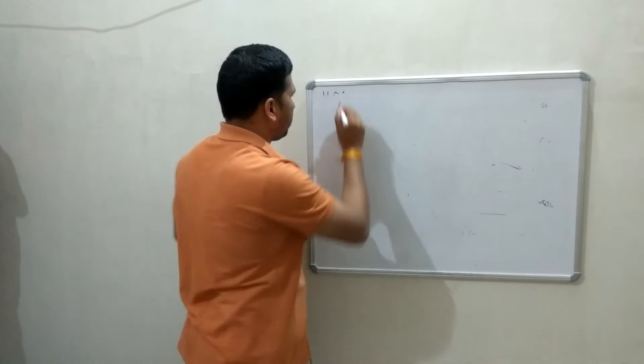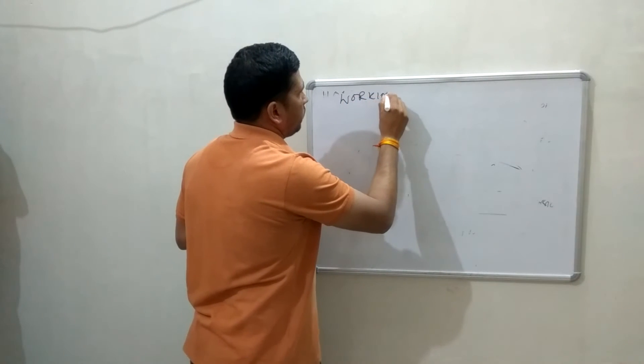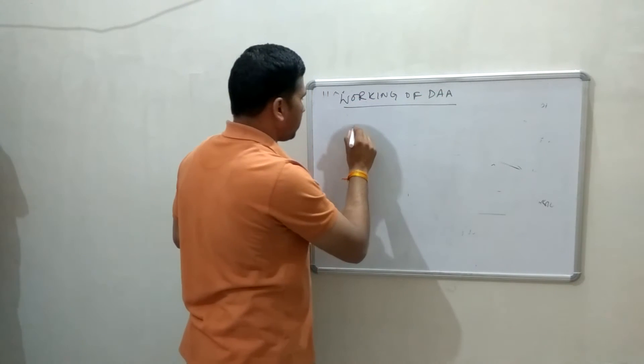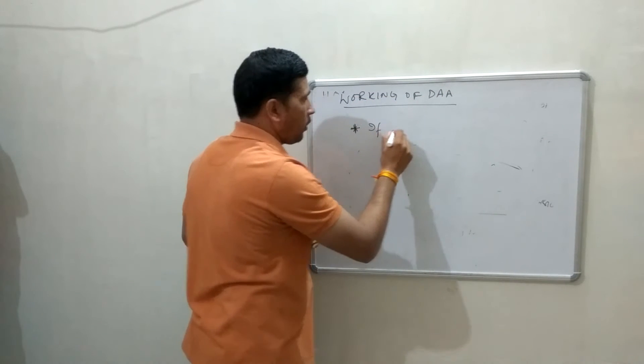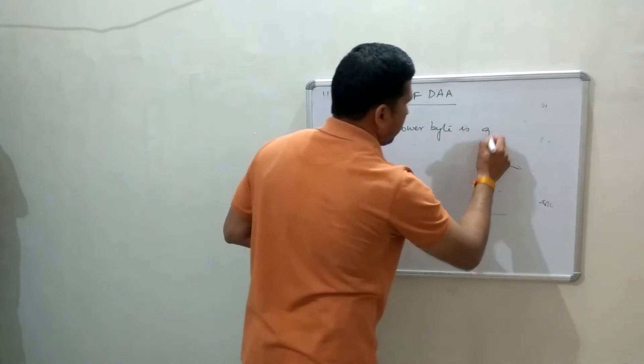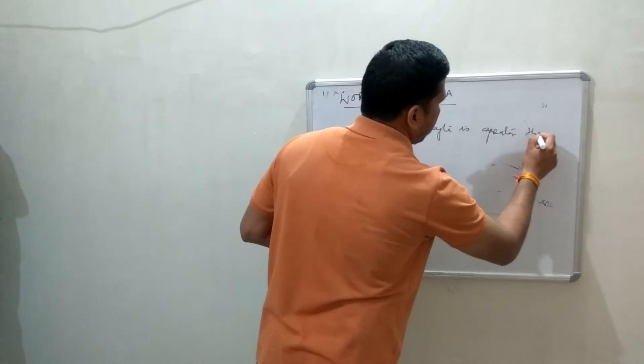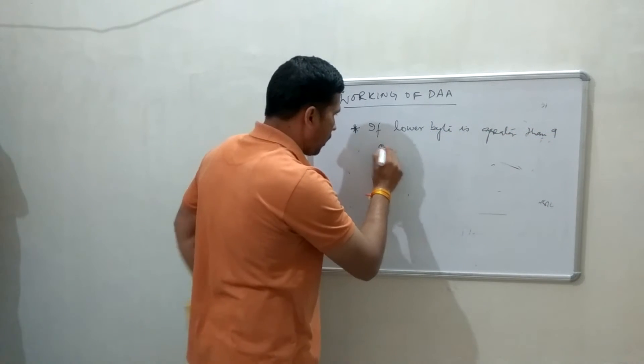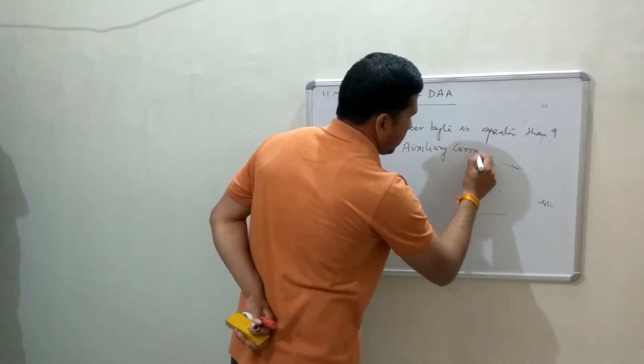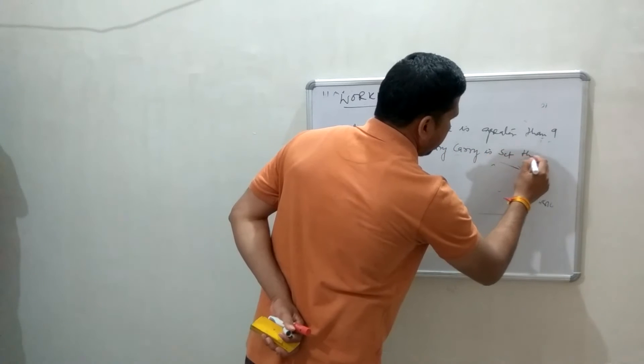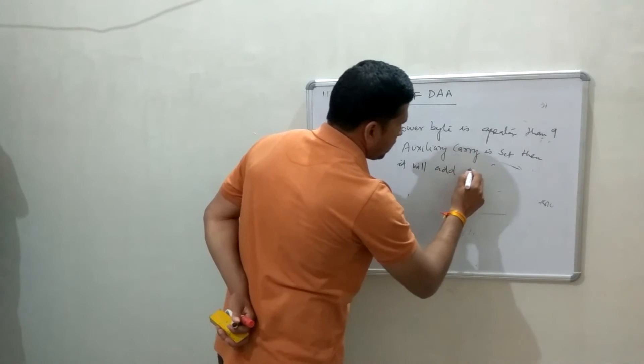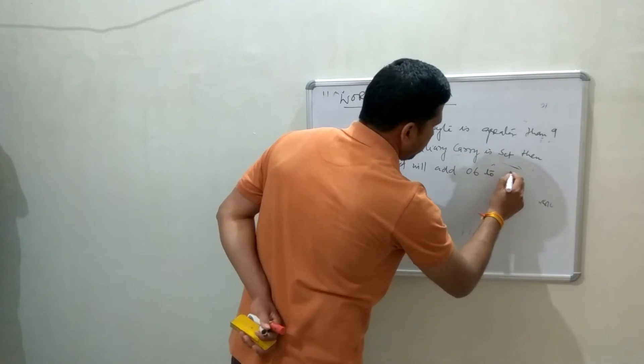Working of this instruction. Now, first thing is, if lower byte is greater than 9 or auxiliary carry is set, then it will change. So, this instruction is to add 06.